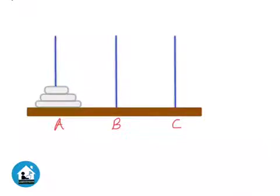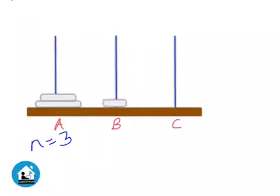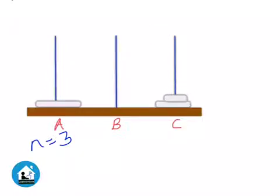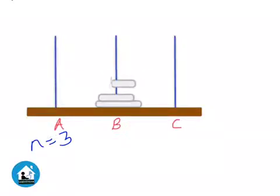Let us try to do this problem for the arrangement of three discs. Initially we have three discs at peg A, so n = 3, and we want to transfer the discs one by one. We transfer the smallest disc, then move the next, then the smallest again, and continue until all discs are successfully transferred from peg A to peg B.